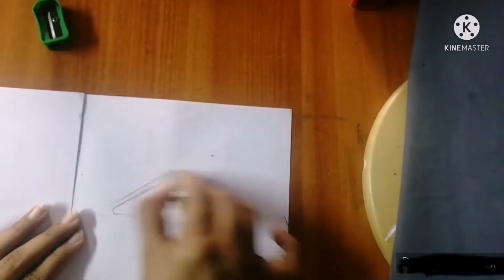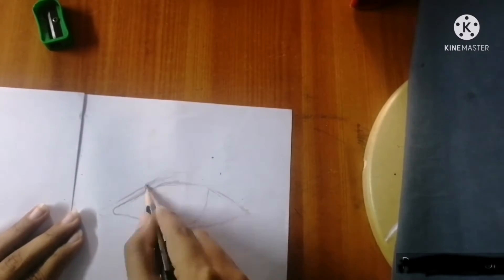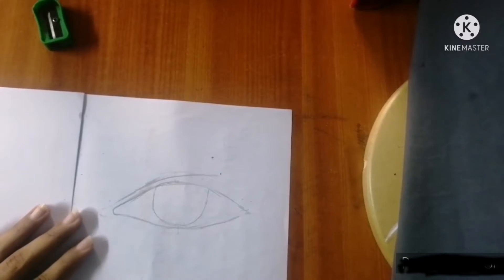Then we will add a little line from the inner eye corner to make it complete.